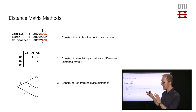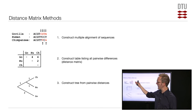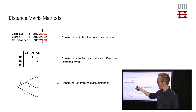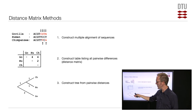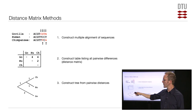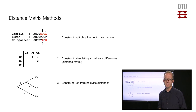This is the essence of all distance-based methods: take a multiple alignment, count the pairwise distances, and build a tree such that distances measured along the tree correspond to the distances you saw in the alignment.